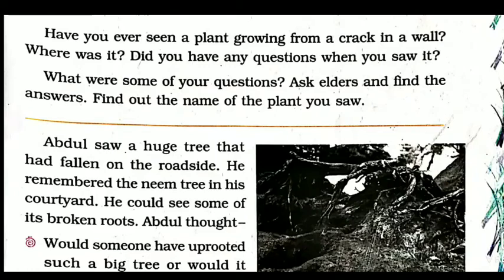Now the next part: what were some of your questions? Ask elders and find the answer. Find out the name of the plant you saw growing from the wall. You can write the name of the plant — for example, the banyan tree sometimes comes out of walls.